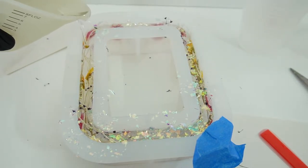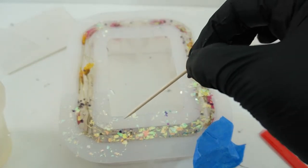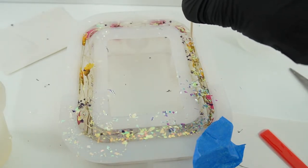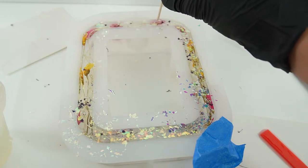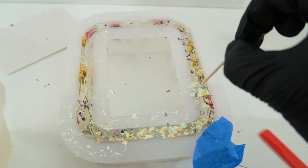Now using the toothpick, I'm going to move things around. I'm going to try to make sure that the flowers are all coated. I'm going to lift them away from the sides, and some of the wires floated, so we're going to push those down too.